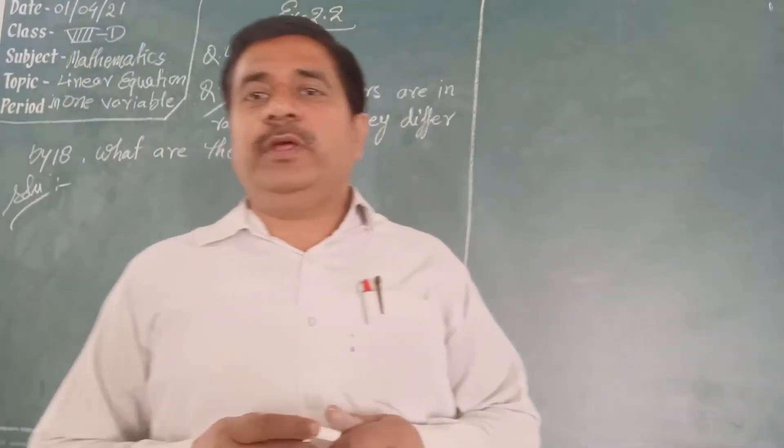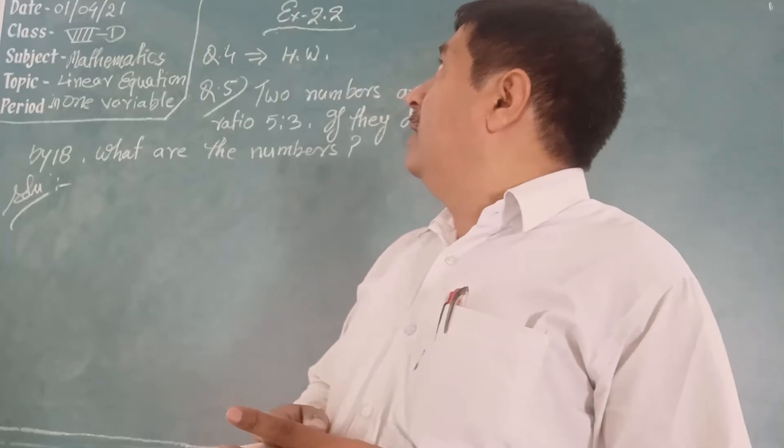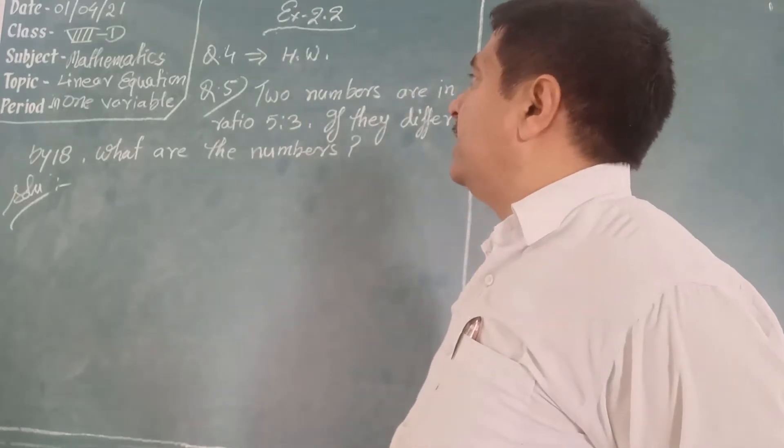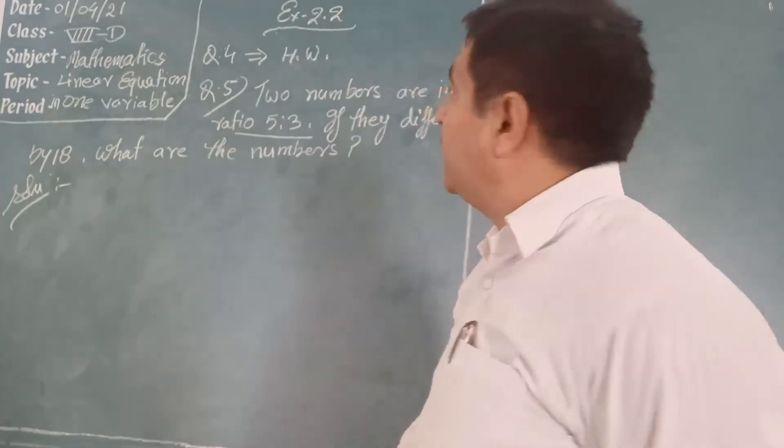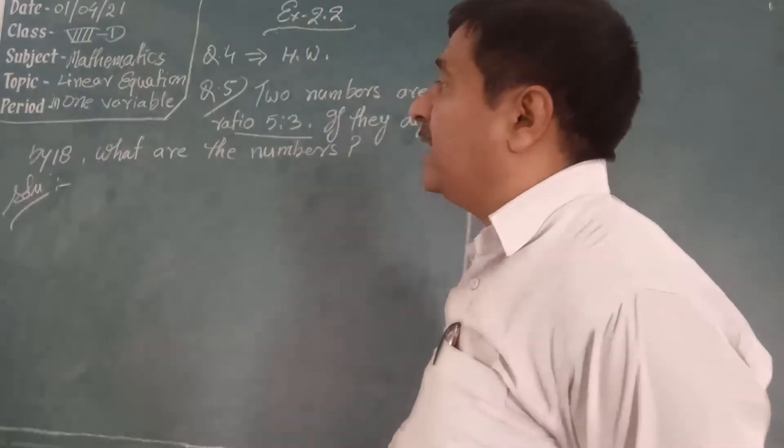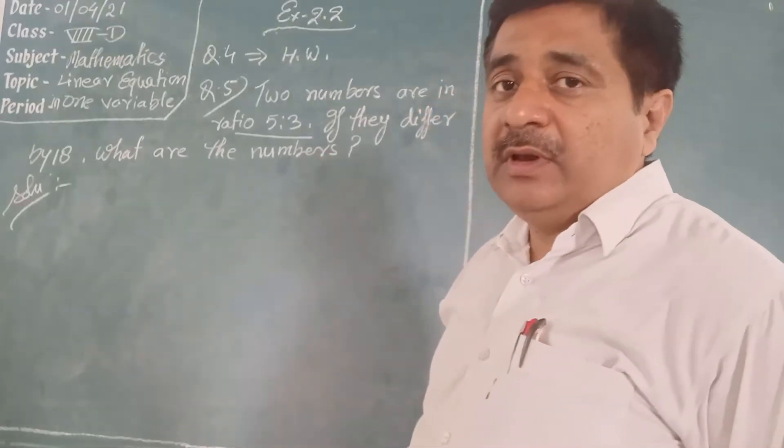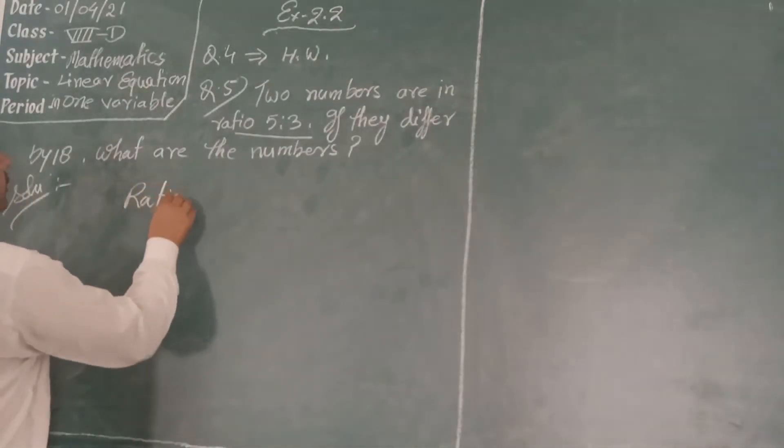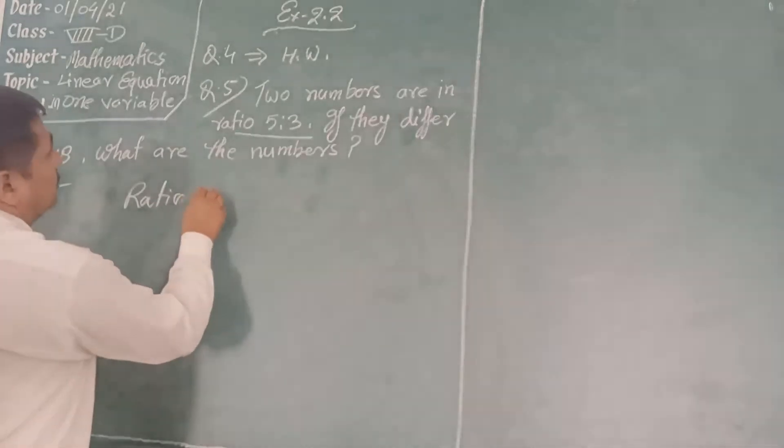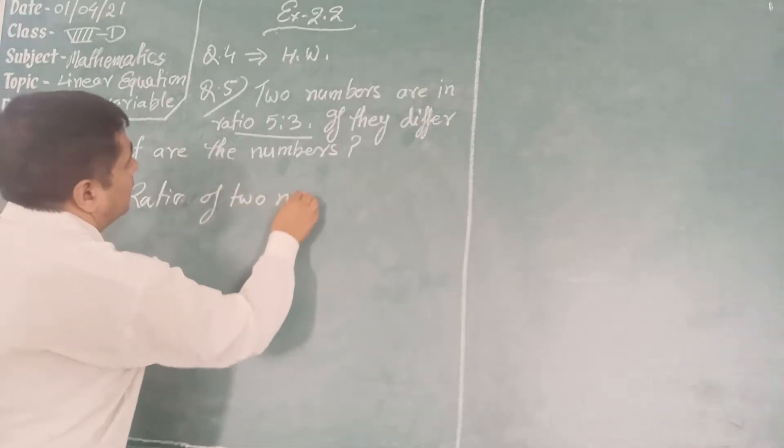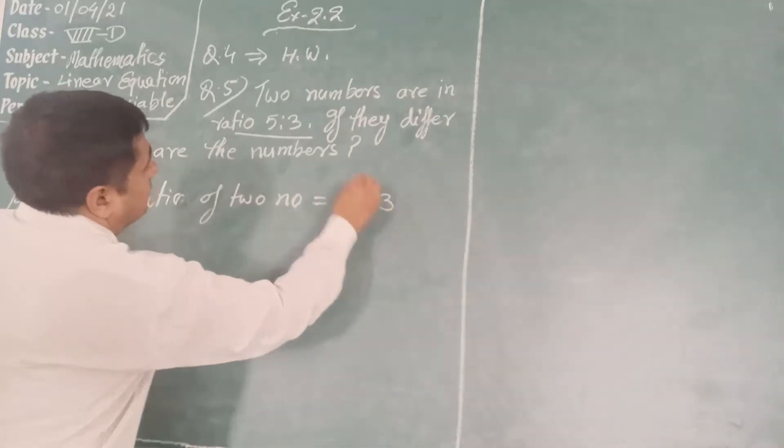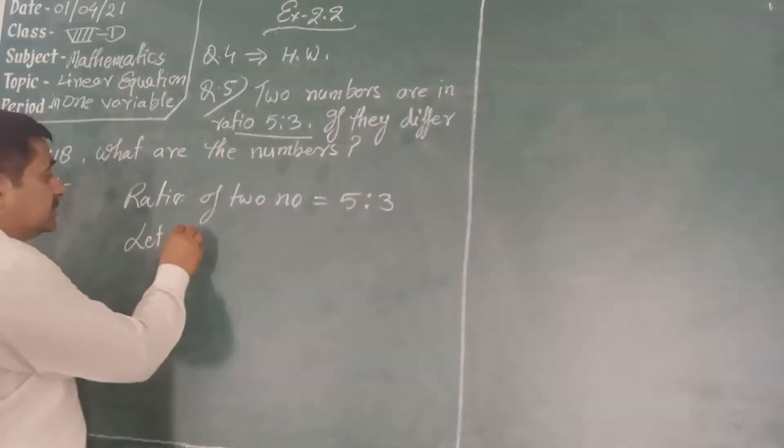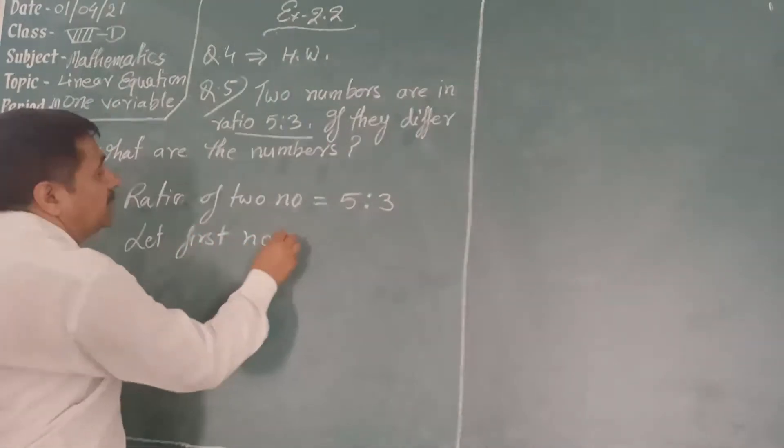Good morning students. Today I will teach you exercise 2.2 of mathematics, question 5. Two numbers are in the ratio 5 is to 3. If they differ by 18, what are the numbers? So let first number be.